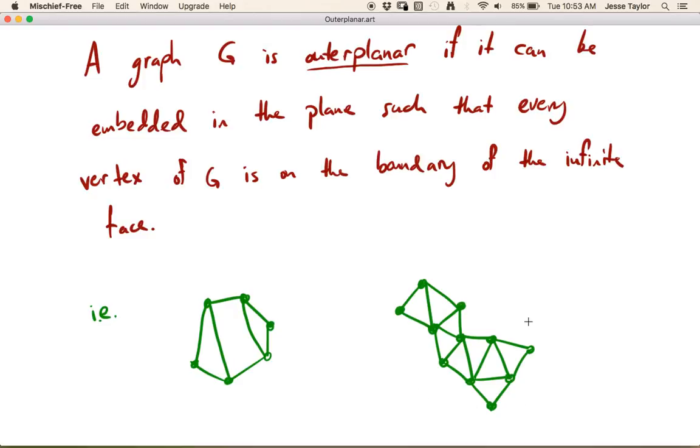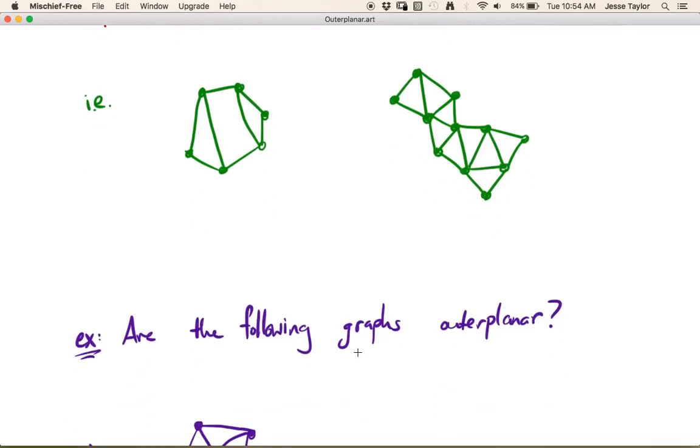So this property, I mean it doesn't actually have to be the infinite face, it could really be any face, but we may as well say the infinite face. So this property that all the vertices lie on the boundary of a common face, that idea is outer planarity. Of course we want to stay planar as well, so no edge crossings. Let's just explore this a little bit.